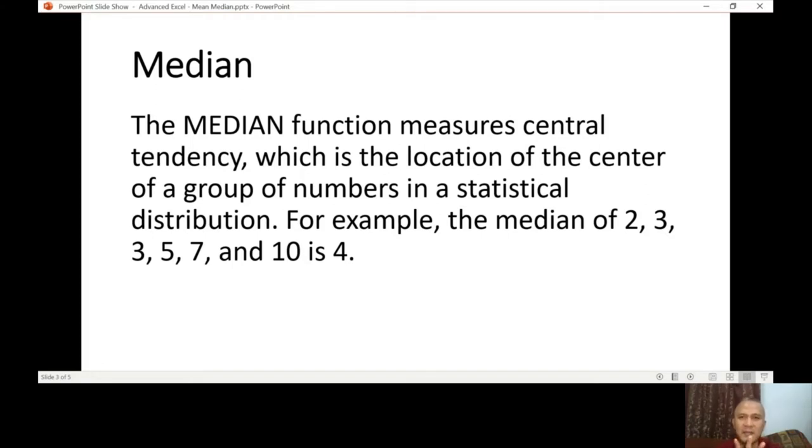The first number is 2, the second number is 3, the third number is 3 again, the fourth number is 5, the fifth number is 7, and the sixth number is 10. So the answer here is 4. Why? Because since we have 6, the central position is in between 3 and 5. So what the function will do is to add or to get the average also of the third and the fourth position. So 3 and 5, the average of that or the mean of that is 4.